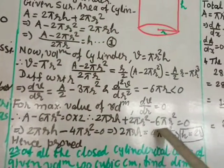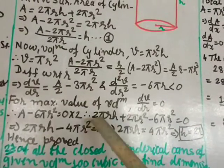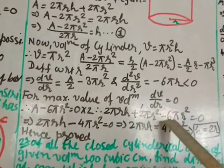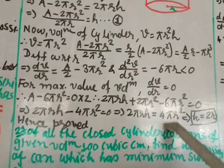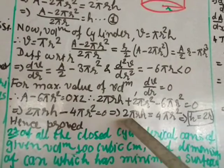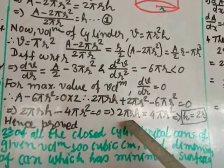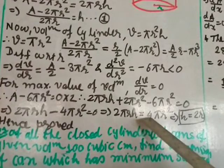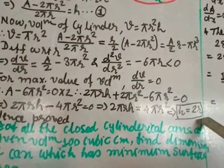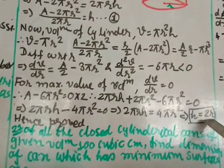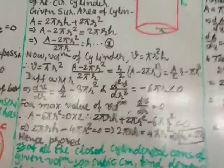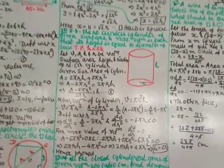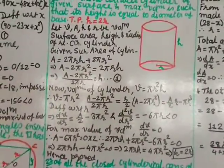Combining terms: 2πrh minus 4πr squared = 0, so 2πrh = 4πr squared. Cancelling π and r: h = 2r. This is what we needed to prove — the height equals 2r, which is the diameter of the base. This completes the proof of Question 20.